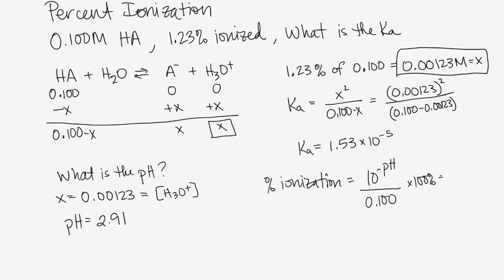So in this case, I can do 10 to the minus 2.91. That gives me 0.00123, just like I expect. And I can multiply by 100 percent and I get 1.23 percent, which is again just what I expect here because I was given that in this problem.